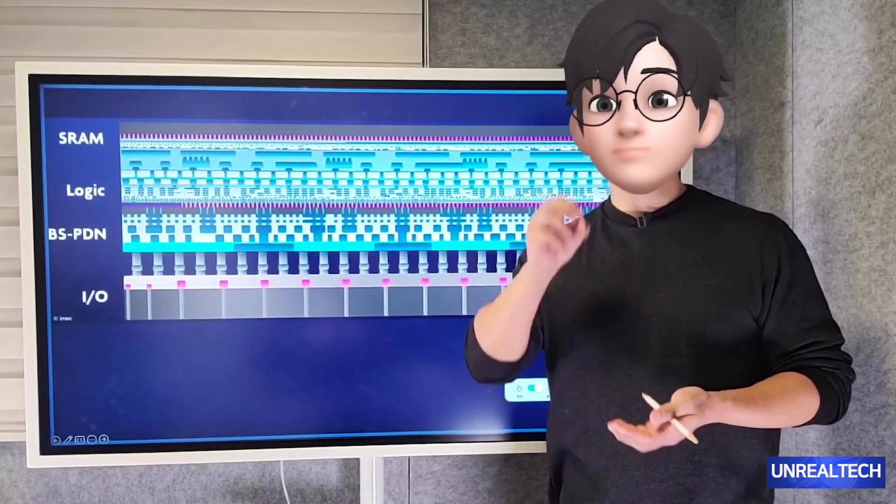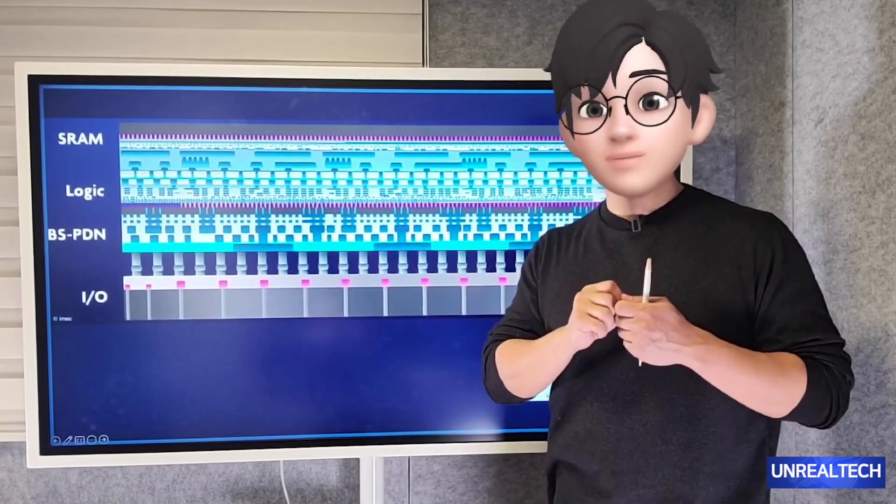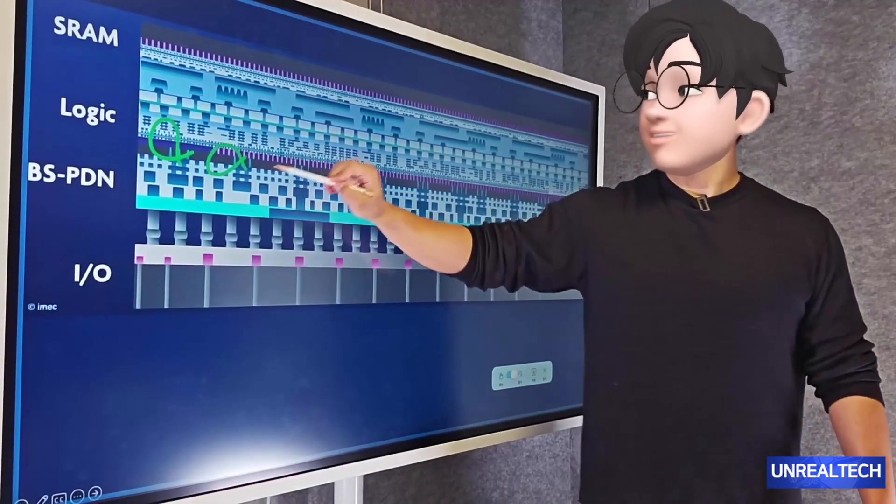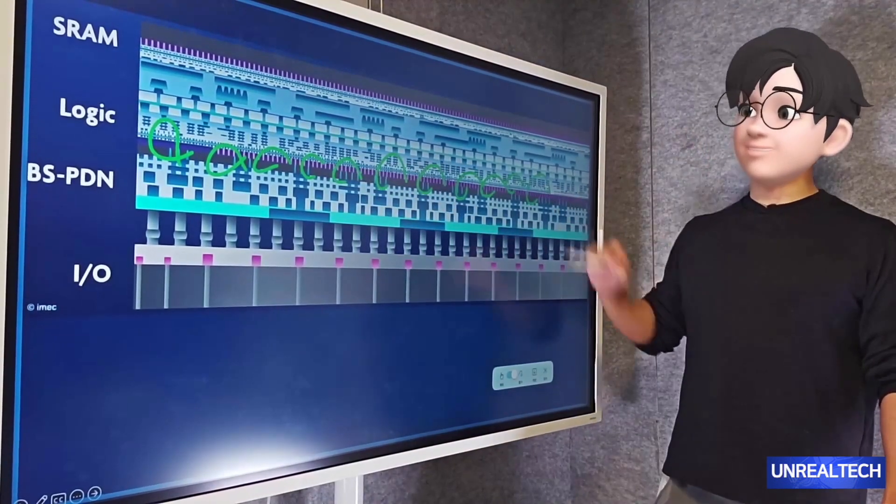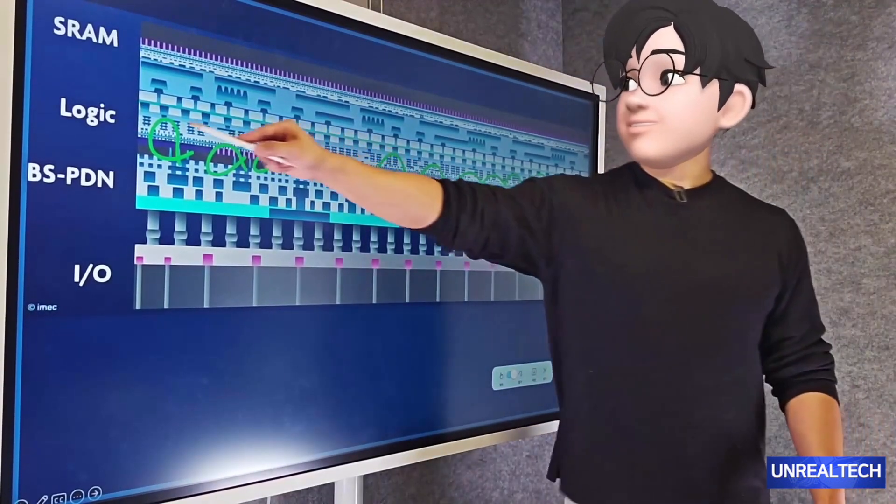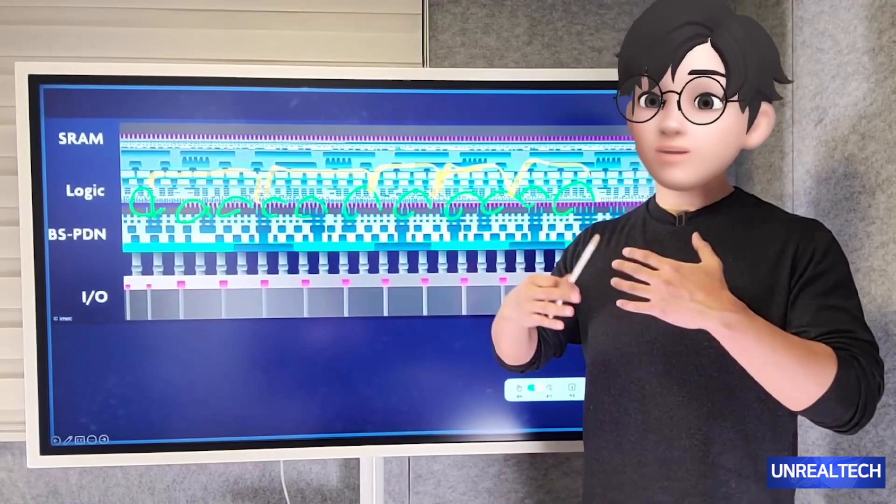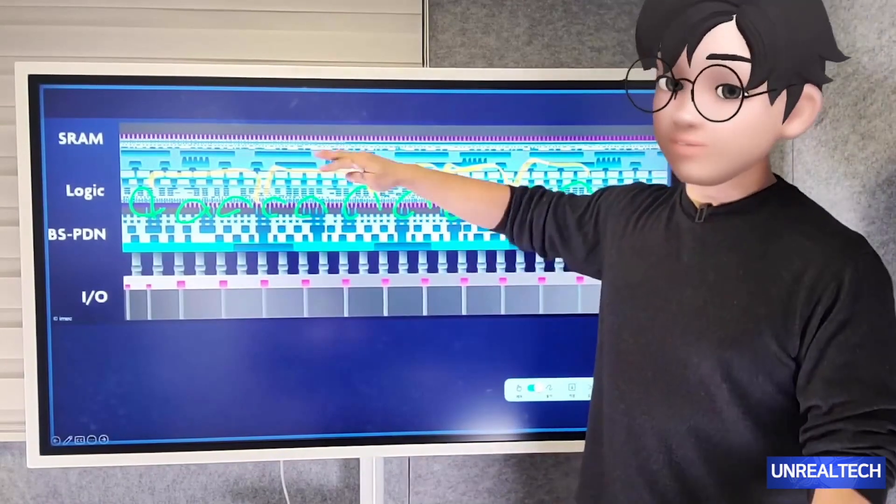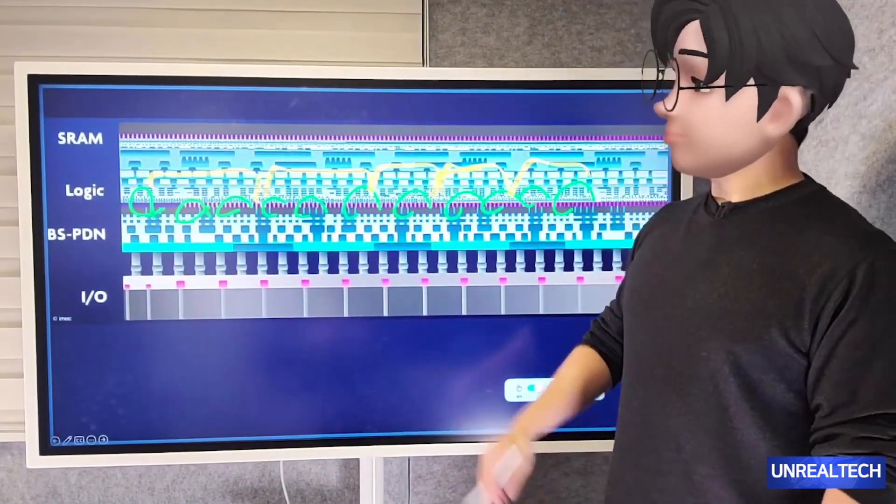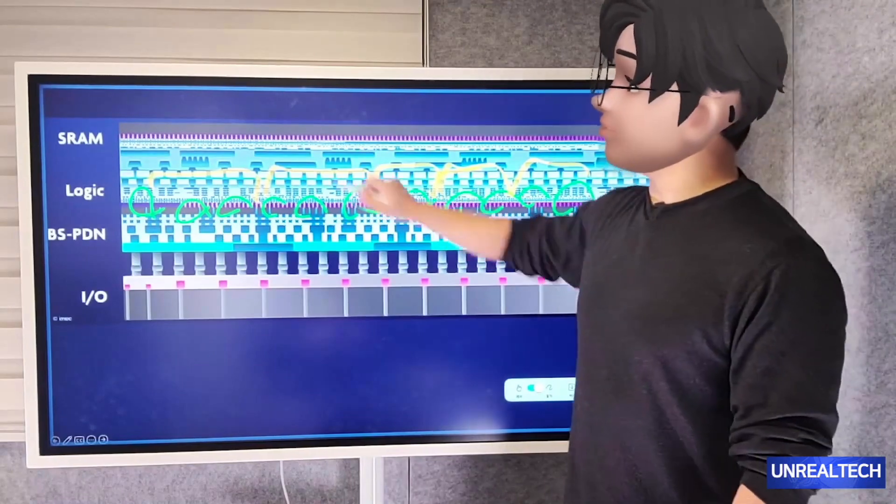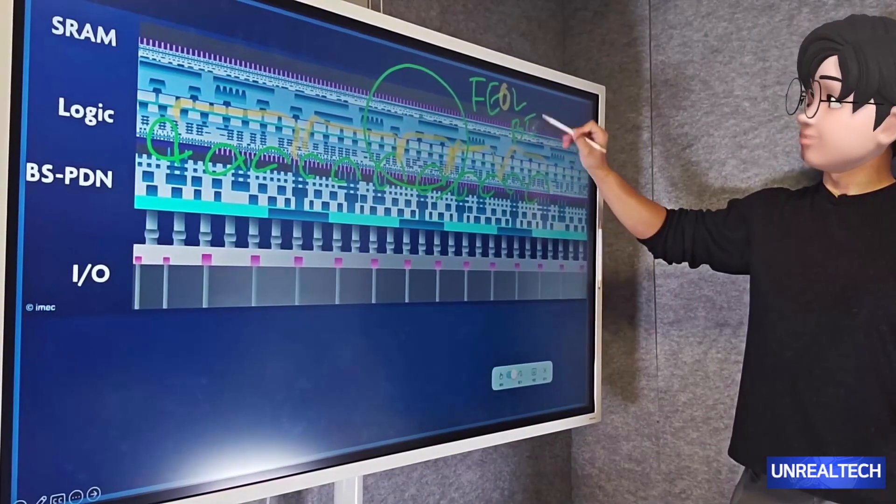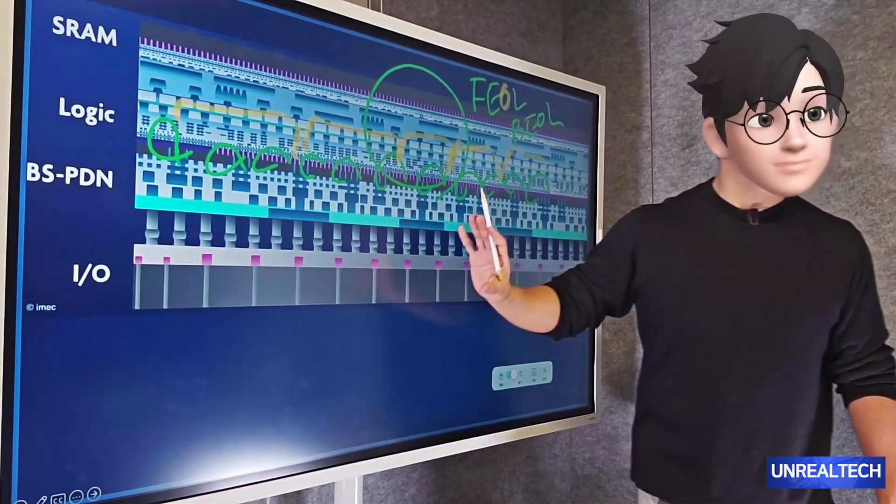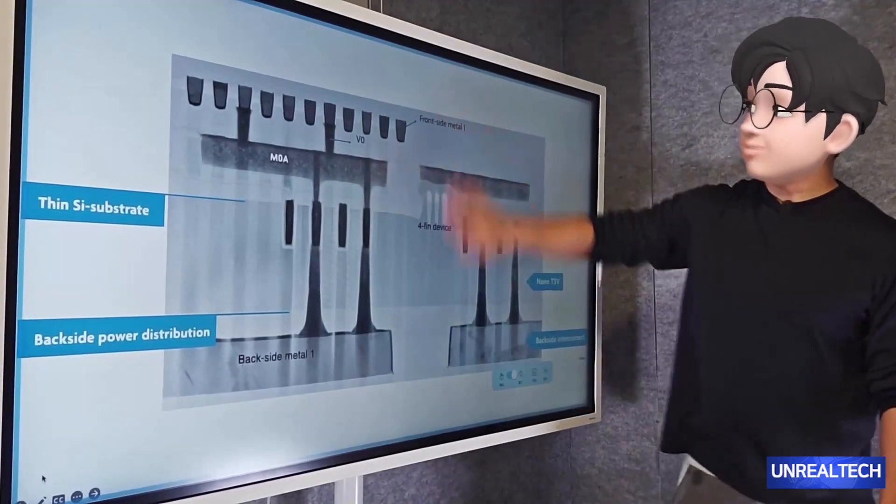The front end of line refers to the process of embedding basic components like transistors and capacitors. These logic elements need to be embedded first, and then the back end of line connects these elements together. By stacking metal wiring, the signal network is connected across the chip. It links the signals. When implementing the backside power delivery network, BSPDN technology, you need to repeat both the front end and back end stages after completing the initial steps.